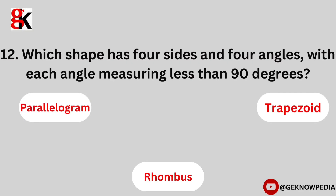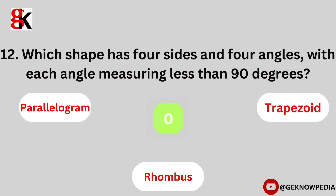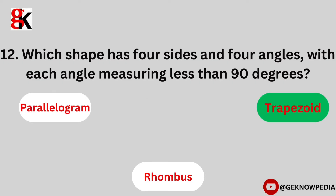Twelfth question. Which shape has four sides and four angles, with each angle measuring less than 90 degrees? Parallelogram, trapezoid, rhombus. The correct answer is trapezoid.